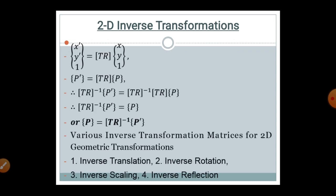The transformation matrix TR and the inverse transformation matrix TR⁻¹ can be represented as: the modified function [X', Y', 1] equals to the transformation matrix multiplied by the initial coordinate system [X, Y, 1]. This can also be represented as P' equals to the transformation matrix multiplied by the initial function P.